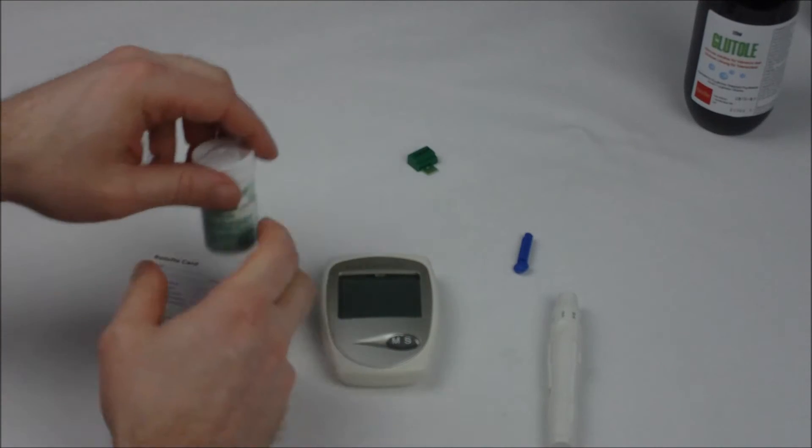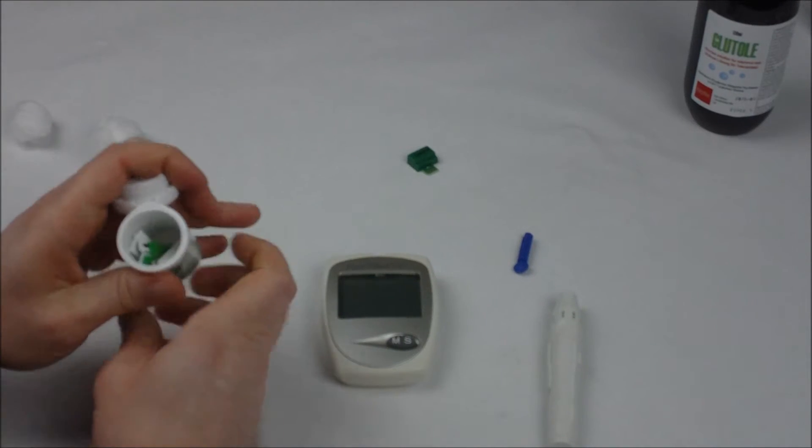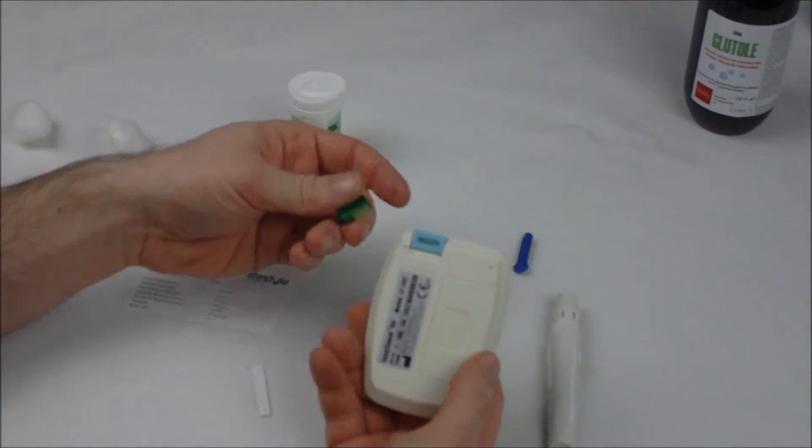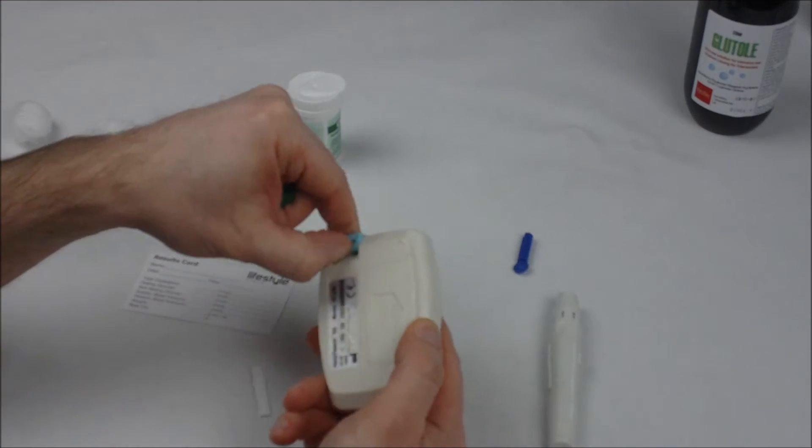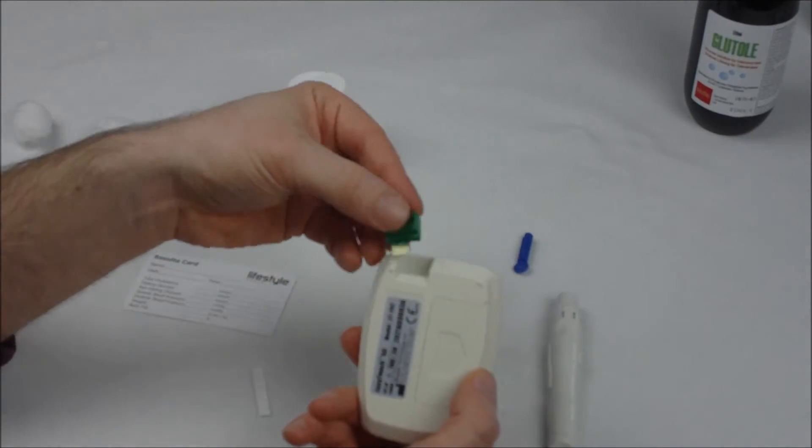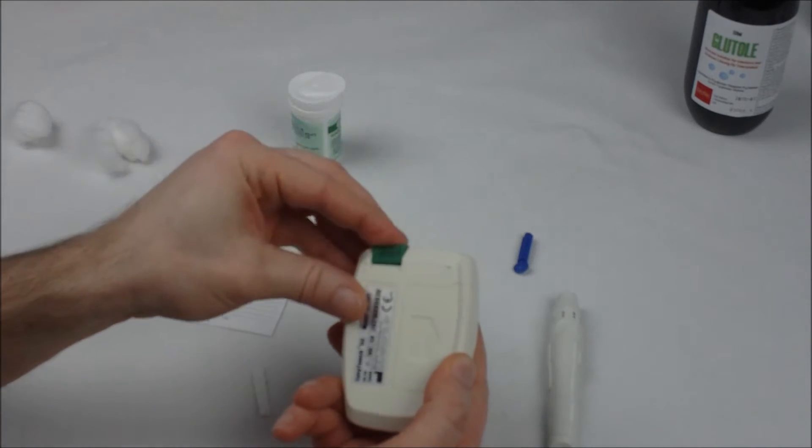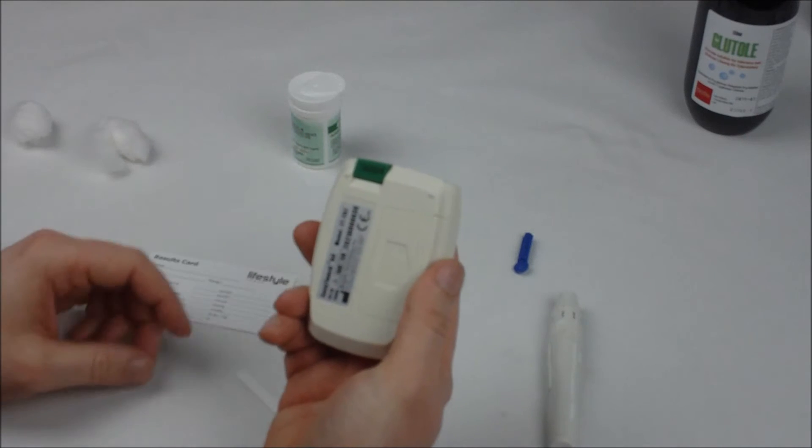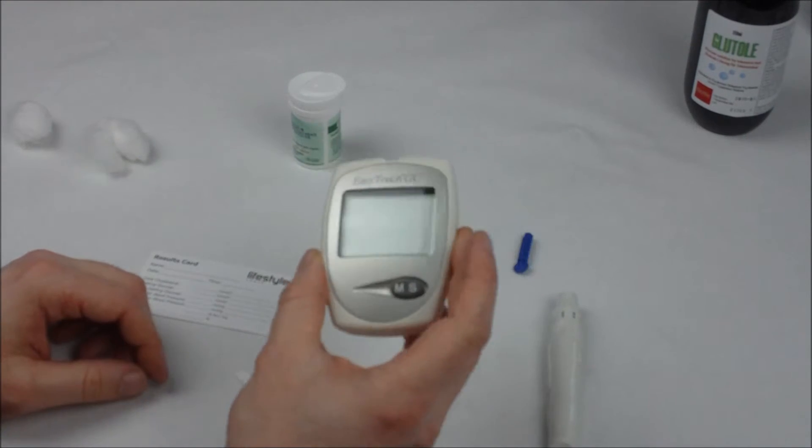We're then going to repeat the glucose measurement as before. So you should have already inserted your code key. Here's my one for my cholesterol test. You don't have to stick your code key in. Your monitor will remember which set of test strips it's using but you can put your code key back into the monitor if you wish.